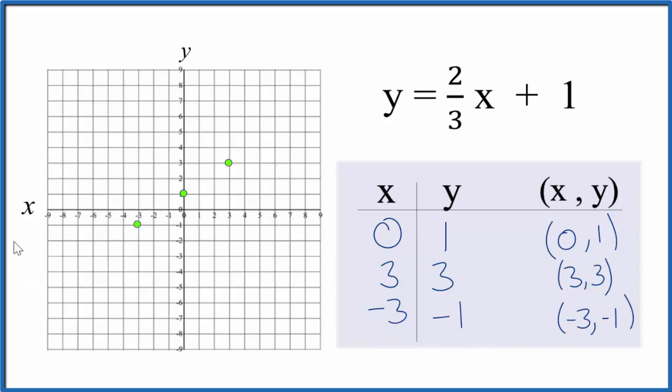We could have used just two points, but when we have three, if we made an error we'll catch that. So this is the line for the equation y equals two-thirds x plus one. Let's put a line through this and put arrows to show that it goes to infinity. So this is the graph for the equation y equals two-thirds x plus one.